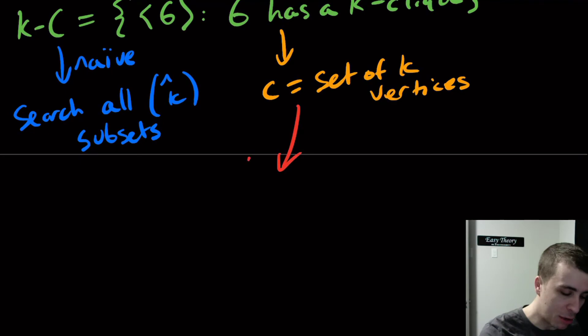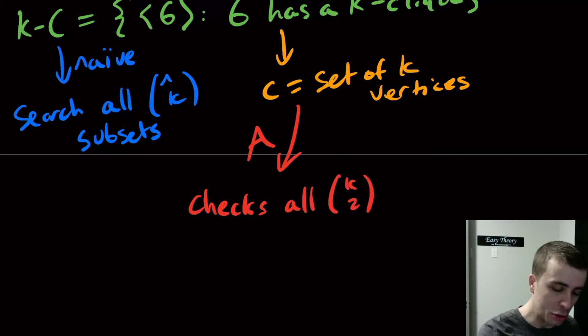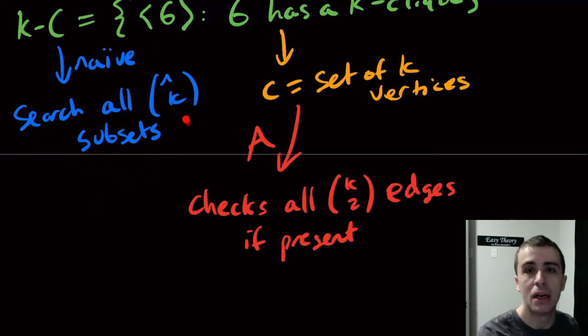The algorithm A checks all k choose 2 edges if present. We had to do that over here also, but I forgot to mention it. Here we have to make sure that each one of the subsets is valid. Here we only have to choose this one subset because the certificate is saying verify it for this particular subset. You don't have to worry about any other subset, just work with this one, and that's pretty easy to do because you just check only those internal edges.